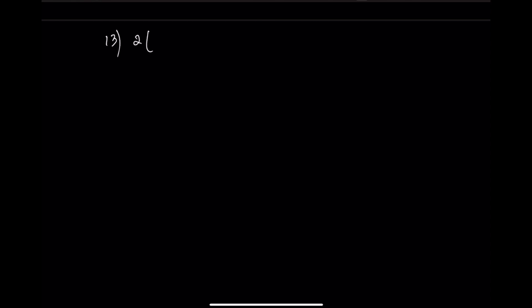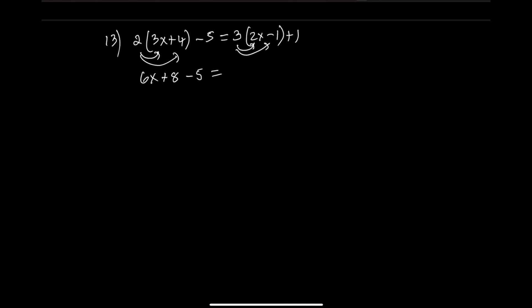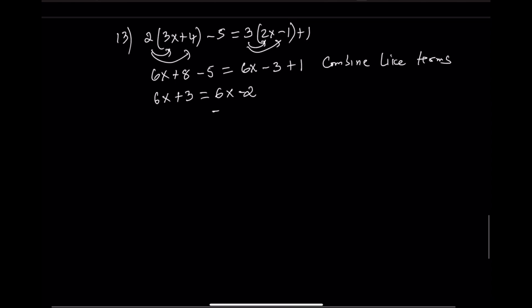Equation 13: 2 times the quantity 3x plus 4 minus 5 equals 3 times the quantity x minus 1 plus 1. Step 1: distribute — 2 times 3x plus 2 times 4 — which gives 6x plus 8. Now 6x plus 8 minus 5. Also distribute 3 times 2x minus 3 times 1, which gives 6x minus 3. Now we have 6x plus 3 on the left and 6x minus 3 plus 1 on the right. Step 2: combine like terms — 6x plus 3 equals 6x minus 2. Step 3: subtract 6x from both sides — 3 equals negative 2. This is false, so there is no solution.